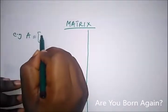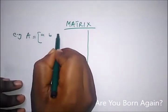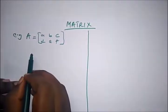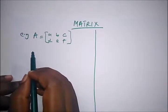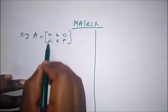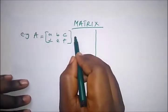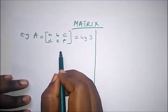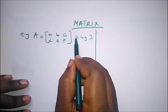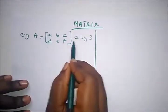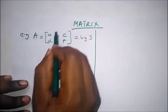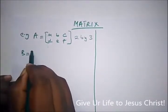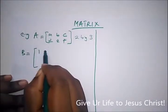For example, we have a b c d e f. This is an example of a matrix where these are the rows and these are the columns. This is an example of a 2 by 3 matrix — that is, two rows and three columns.